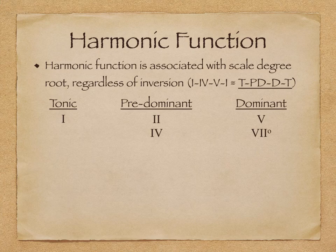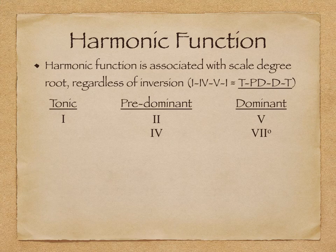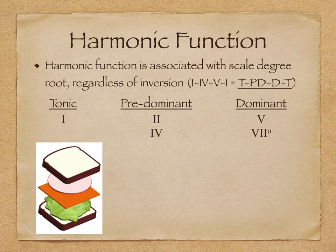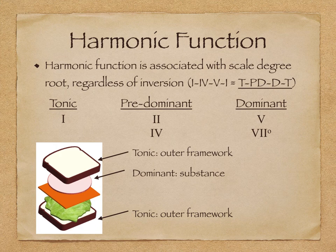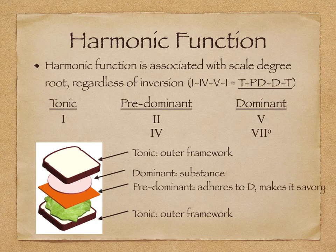Like language, this cycle has a flow, but also sense, in that you need to have certain words in a certain order to make sense. It's helpful to think of harmonic function like a sandwich, where the tonic harmonies are the bread and the outer framework. The dominant is the meat, or the substance, creating contrast between the breads. Now we can have a meat and bread sandwich, but often we like to add more interest — so we can think of predominant like a cheese, which is optional, but sticks to the meat and makes our sandwich a little more savory.